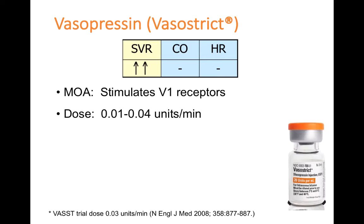Vasopressin is dosed as a continuous infusion at 0.01 to 0.04 units per minute, although in practice it's typically started at 0.04 units per minute and just turned on or off rather than titrated. Advantages include being nonadrenergic, so it may be synergistic when combined with an adrenergic agent. It also retains efficacy in acidosis, where catecholamine responsiveness decreases. Additionally, in septic shock patients, endogenous vasopressin levels are depleted, so administering it may partly replace what's deficient.